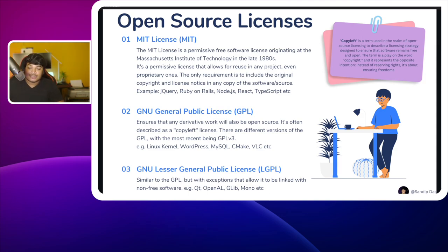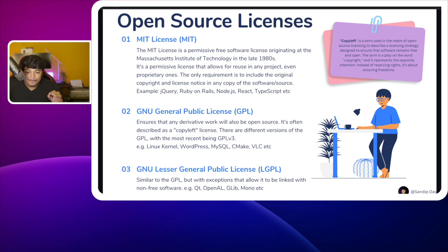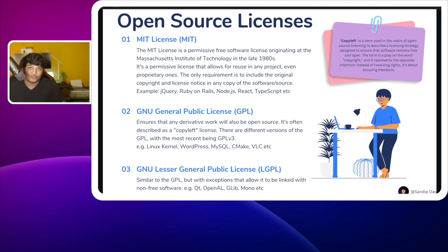The third license is the GNU Lesser General Public License, or LGPL. It is similar to the GPL but with the exception that it can be linked with non-free software. Examples include Qt, OpenGL, GLAB, and Mono.